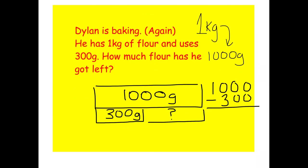0 take away 0 is 0, 0 take away 0 is 0, 0 take away 3 we cannot do, so we're going to do some exchange. 10 take away 3 is 7 — our answer is 700 grams.